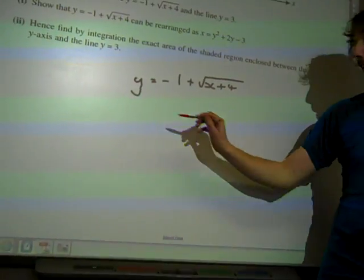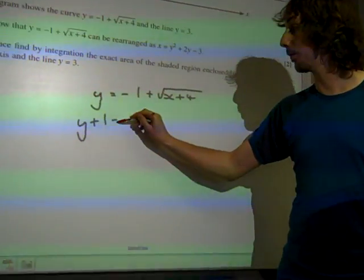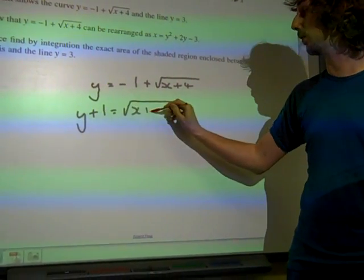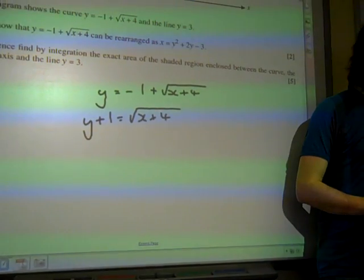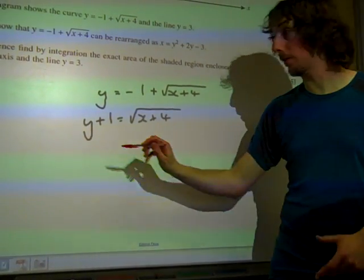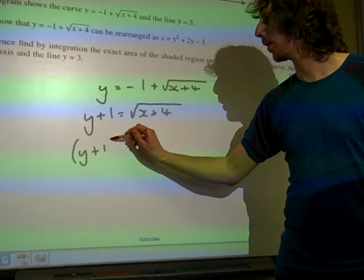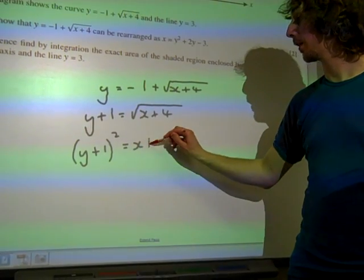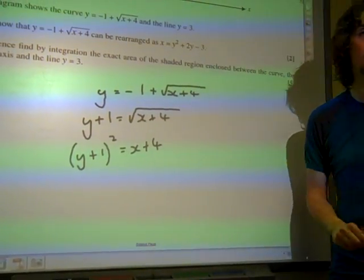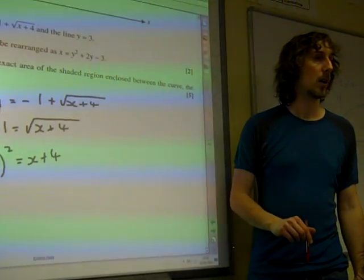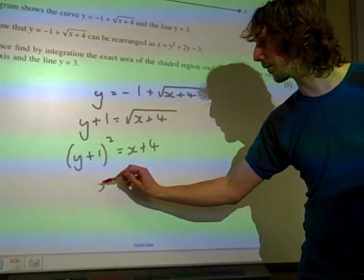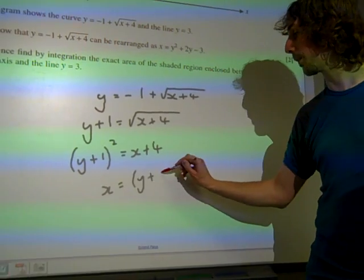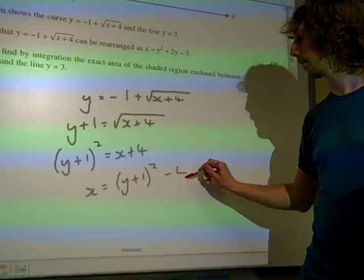y minus 1 plus the square root of x+4. So if we rearrange that, that's y+1 is the square root of x+4. We could square both sides now, and that would get rid of the square root sign. y+1 squared is x+4. So actually, x is y+1 squared minus 4.